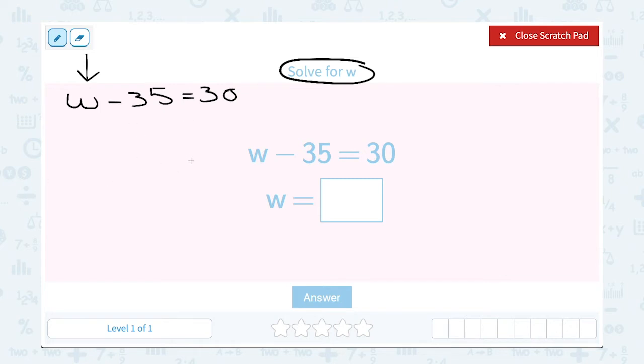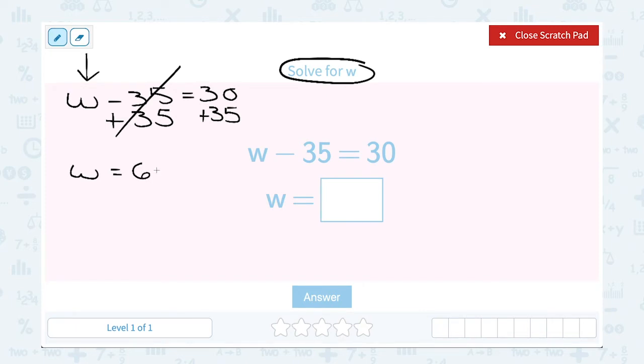To do that, I have to think to myself, what is the inverse or opposite of subtracting 35? Well, the opposite of subtracting 35 is adding 35. And of course, if I add 35 on the left, I have to do the exact same thing and add 35 on the right side. Now minus 35 and plus 35 cancel out, so now I have W by itself. And then on the right side, I just have to add 30 plus 35 gives me 65. So that means W is equal to 65.